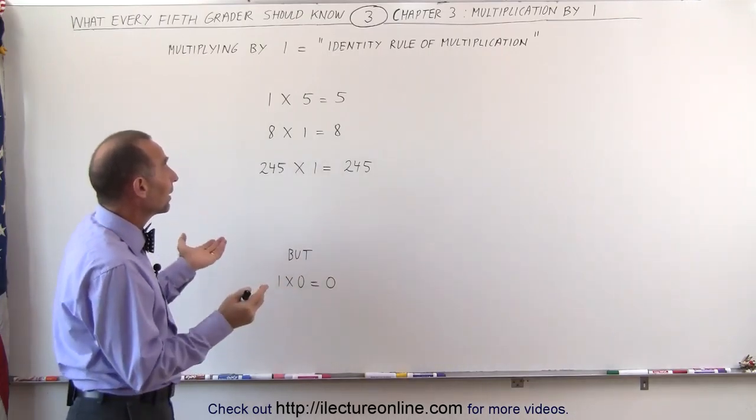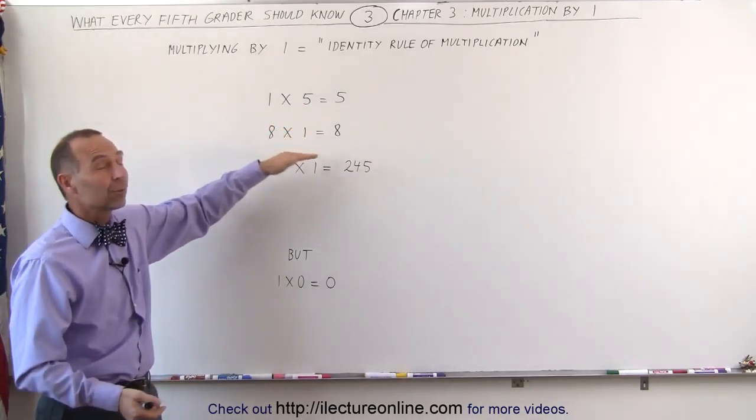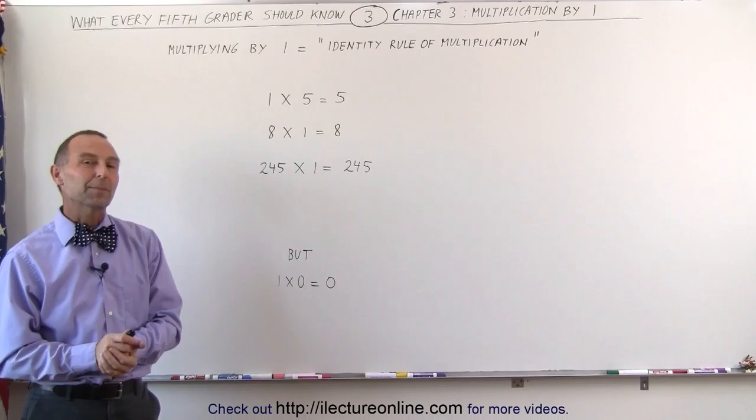So multiply times 1, it's really easy. Just repeat the number. 1 times 5 is 5, 8 times 1 is 8. And that's the rule of multiplying by 1.